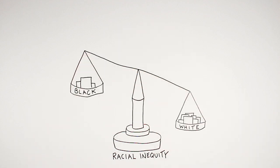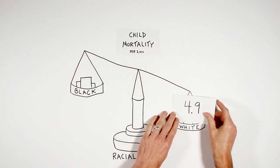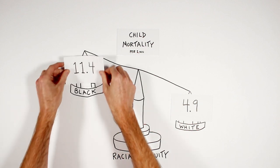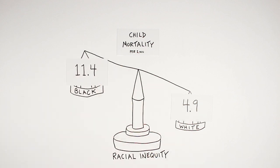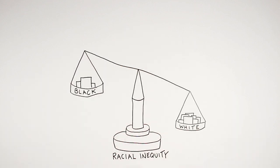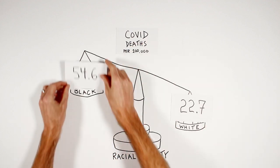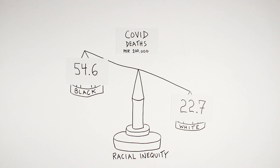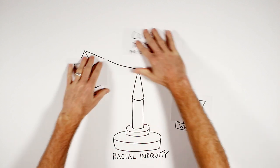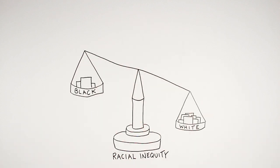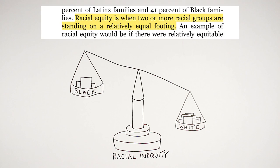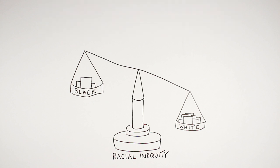There's also a distinct contrast in child mortality rates. It's disturbing that child mortality among black infants is twice that of white infants. And more recently, pulling in data from late May, the COVID-19 mortality rate for black people is over twice that of white people. The goal then is to move from racial inequity to racial equity, which is when two or more racial groups are standing on relatively equal footing. So how did we get to this situation, and how do we get out of it?